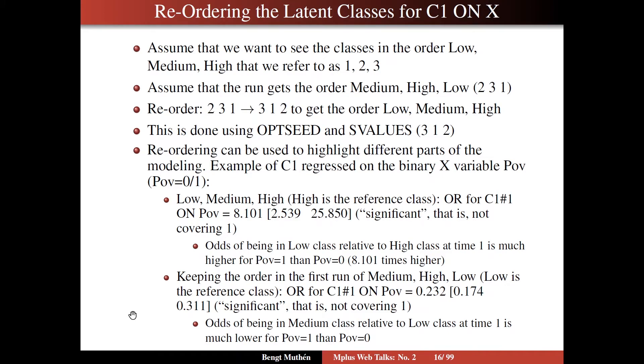On slide 16, I'm talking more specifics about reordering latent classes. Say we have this reading example, and we would like to see the classes in the order of low reading skills, medium and high, in the order that we have seen them in the example. Let's refer to them then as class 1, class 2, class 3. Say we do an Mplus run and Mplus doesn't know which order we want the classes to come out. Say the run gives us the order of medium, high, low. So the order is class 2 comes first, class 3 comes second, class 1 comes last. Now we want to reorder that to get it in the desirable order of low, medium, high. So we reorder the order 2, 3, 1 that we have to 3, 1, 2. That is, we want the last one, the third one to come first, to put 3 there. We want the second one, the first one appearing, we want that to come second. So we say 1 here, because it's the first one there. And we want the second appearing class to be last, so we put 2 there.